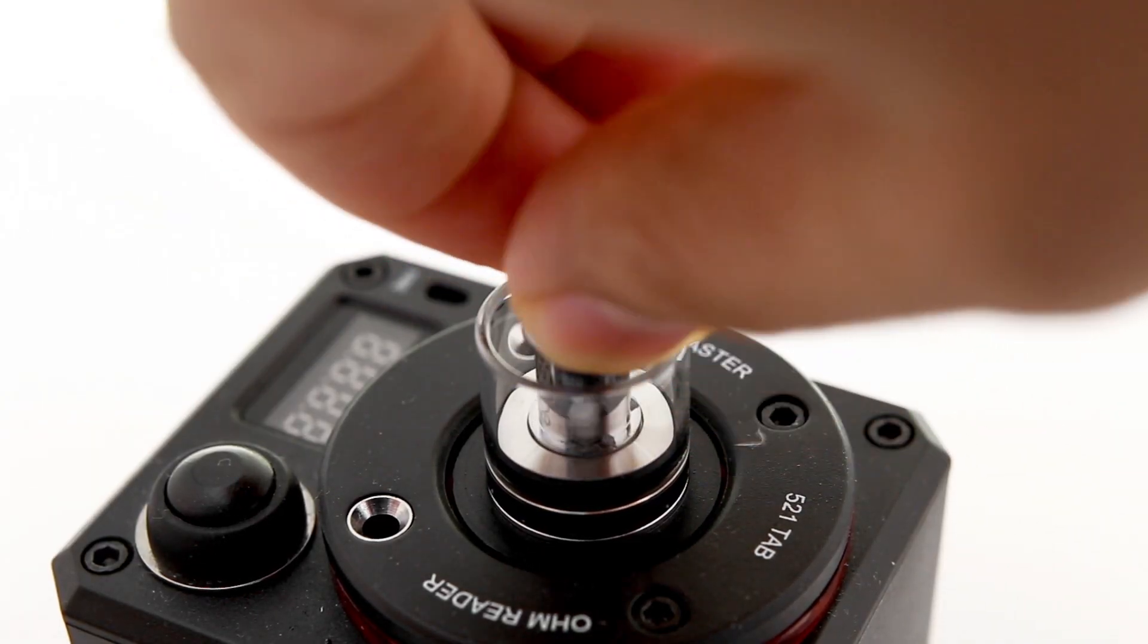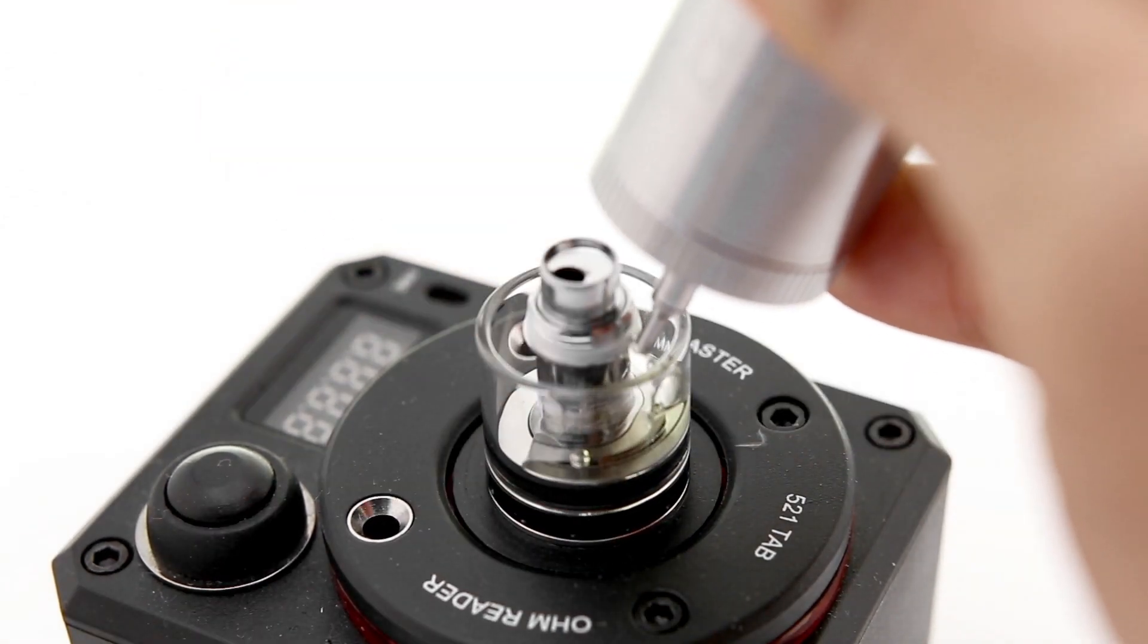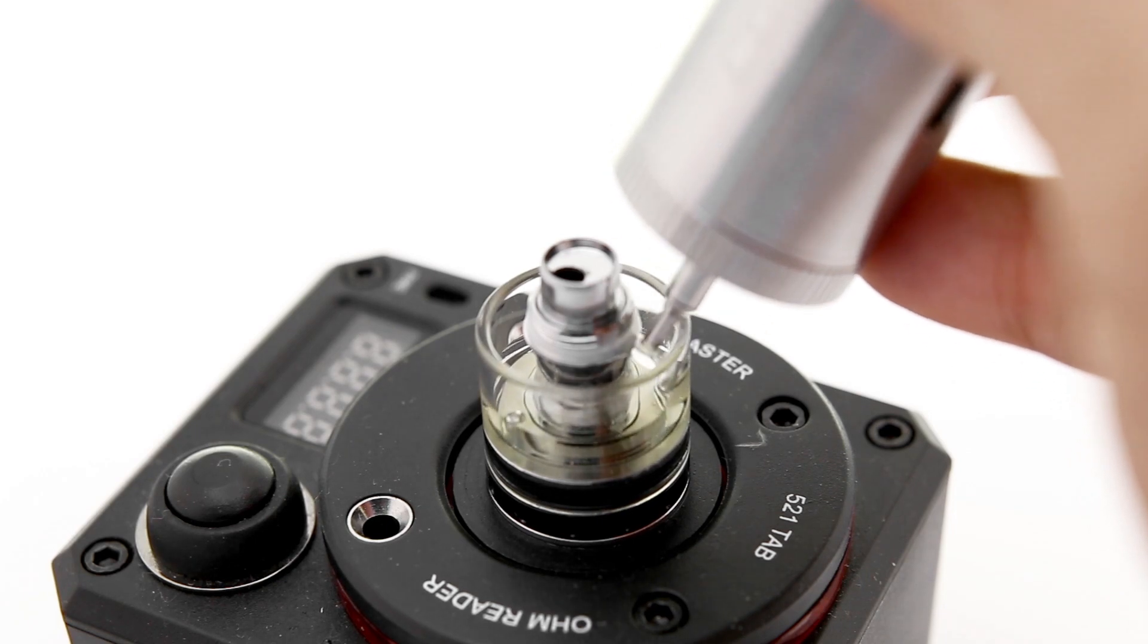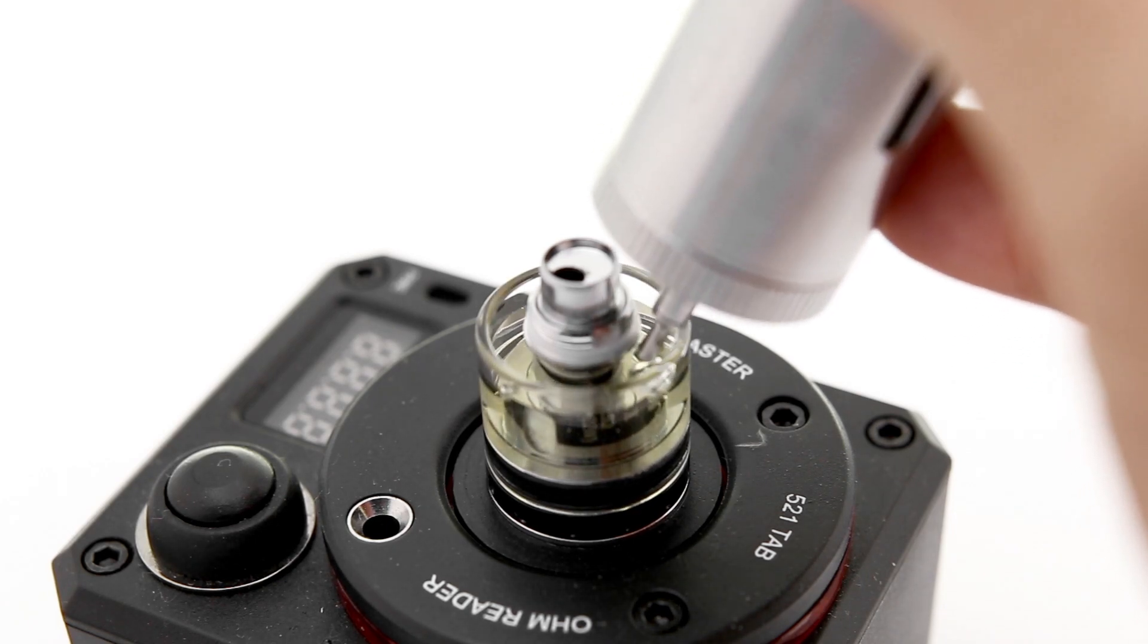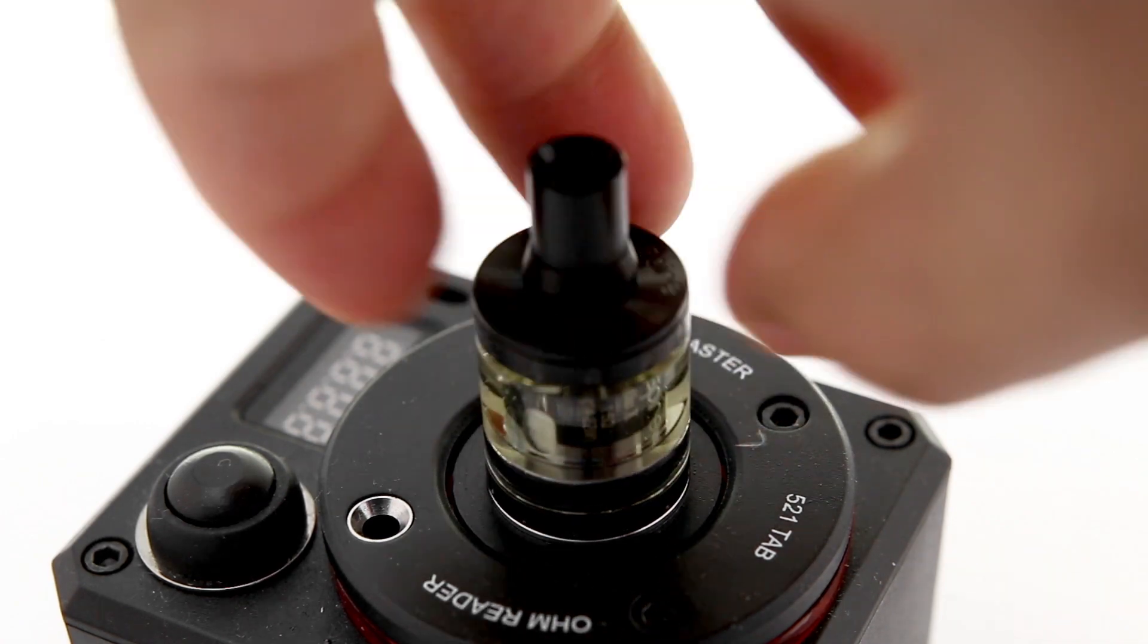To fill the tank, screw the coil into the base of the deck, and make sure it's screwed in tightly. Fill the tank with liquid until it's just below the lip on the top of the coil. Any more than this, and the liquid can leak out when you screw on the top piece. Carefully screw on the top piece onto the coil.